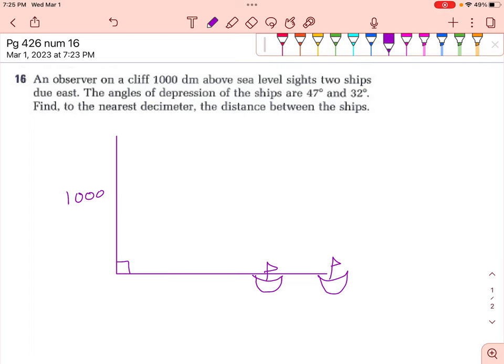The angles of depression of the ships are 47 degrees and 32 degrees. That means you're standing on the edge of the cliff, and your normal eyesight looking straight out looks like this, but to see the ships, you need to have an angle of depression. In other words, your sight line is going to go down.